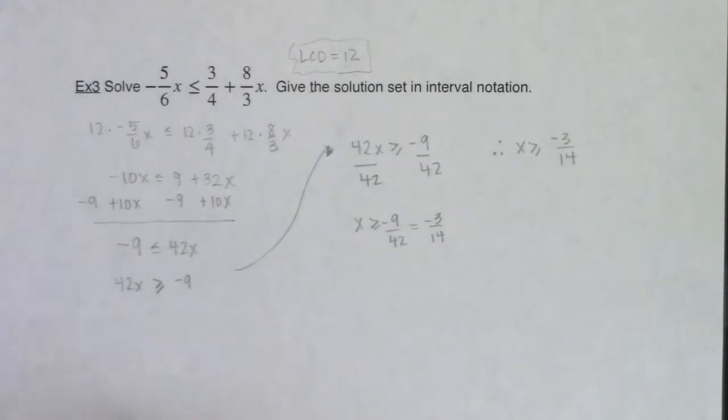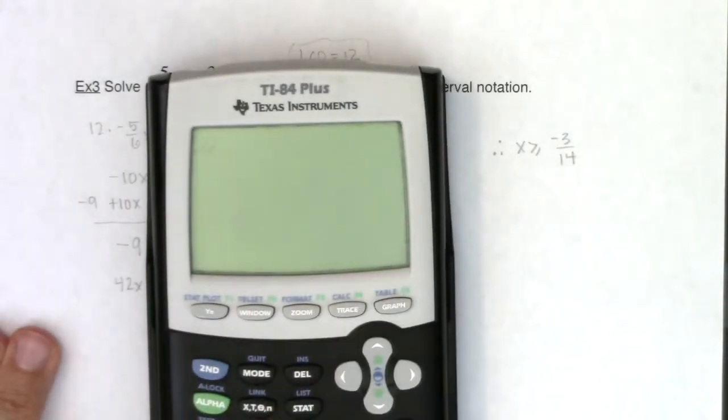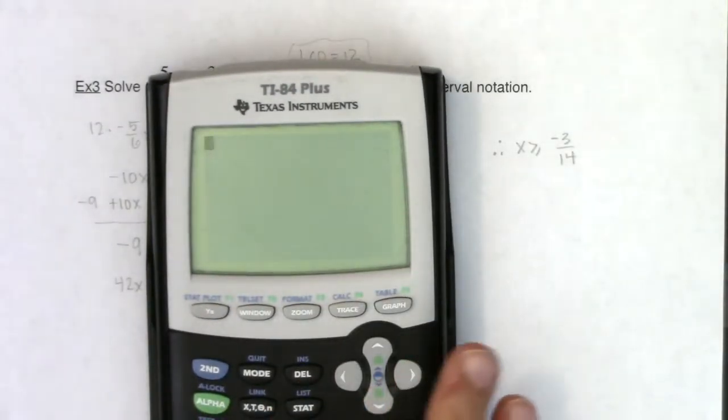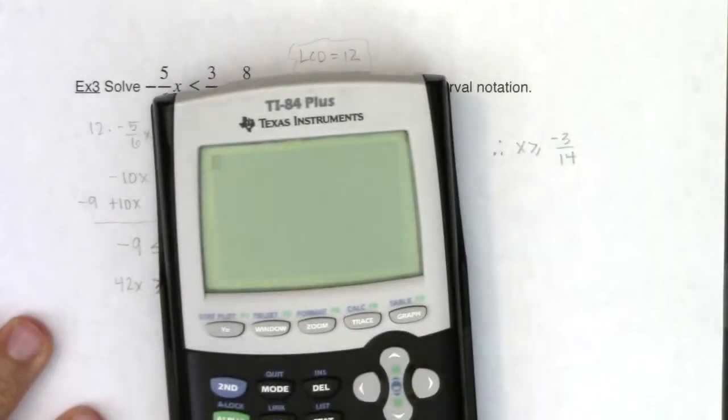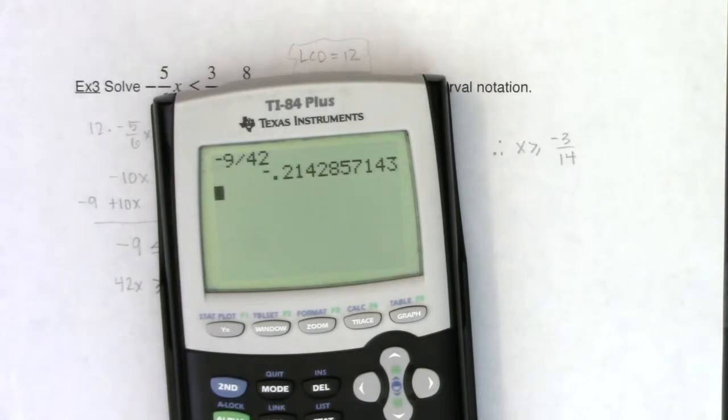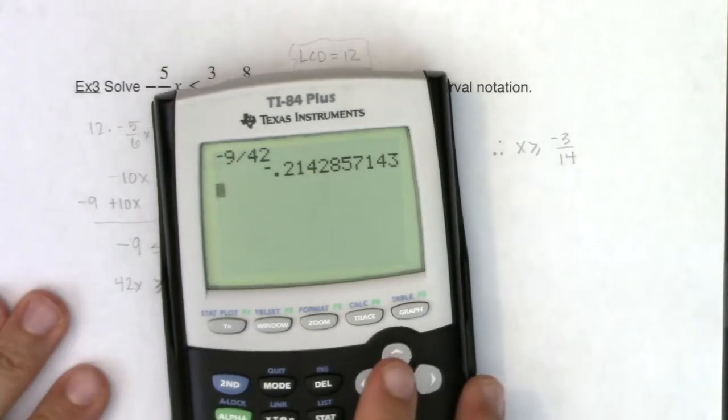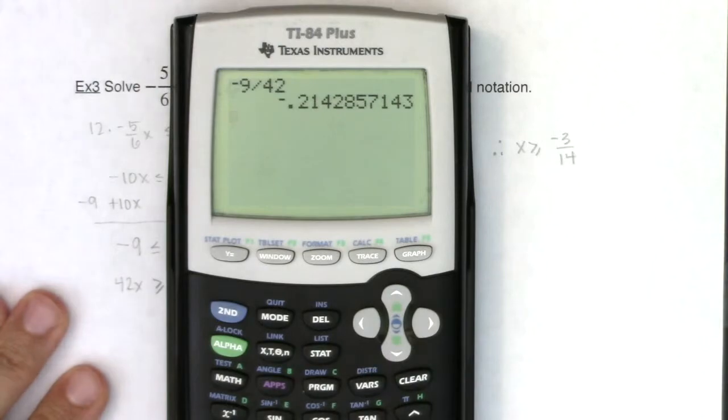Now, I want to show you something. All right, let's say you had a fraction. And what was our original fraction? Negative 9 over 42. If you enter that into your calculator, here's a little math magic that is an amazing little button to know. All right, let's see if we can get it in view.